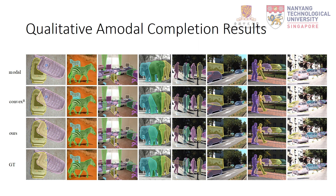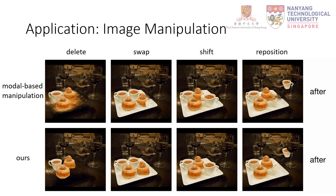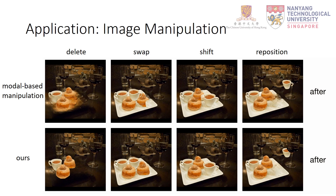We show qualitative amodal completion results — please pay attention to the yellow objects, where our method's results are potentially more natural than the ground truth. Our scene deocclusion framework allows decomposition of a scene into background and isolated completed objects, along with an occlusion ordering graph, making it possible to manipulate scenes by controlling ordering and positions. We show four kinds of manipulations: deleting, swapping, shifting, and repositioning objects. Compared to the baseline modal-based manipulation using image inpainting — where modal masks are provided but ordering and amodal masks are unknown — our method produces natural manipulations while modal-based results contain many defects.